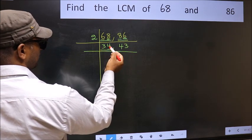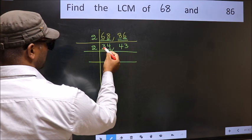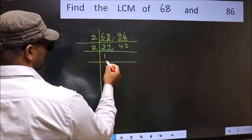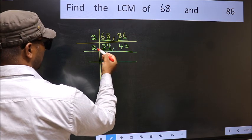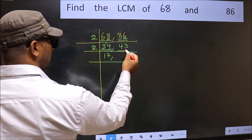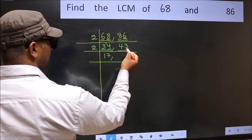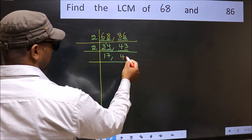Now 34. Last digit 4 is even, so take 2. First number 3, a number close to 3 in the 2 table is 2. 1 times 2 is 2. 3 minus 2 is 1, carried forward makes 14. When do we get 14 in the 2 table? 7 times 2 is 14. The other number 43, last digit 3, not even, so this is not divisible by 2. Write it down as it is.